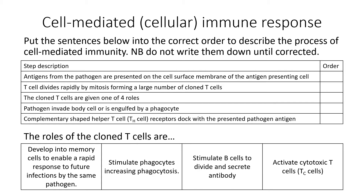There are five main steps involved in the production of helper T cells, and there are four functions of those T cells. Pause the video and see if you can remember the sequence of five steps. The four functions of T cells are: memory cells, stimulate phagocytosis, stimulation of B cells — which is what we're going to look at in this presentation — and the activation of cytotoxic T cells and the production of perforin by cytotoxic T cells.